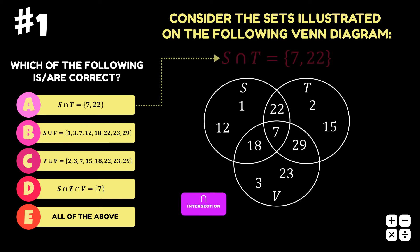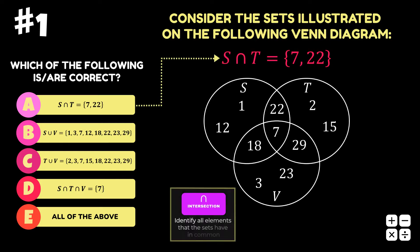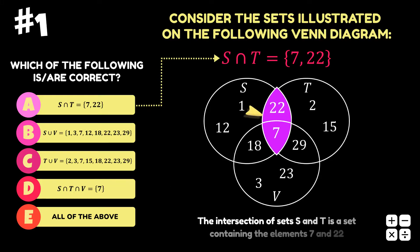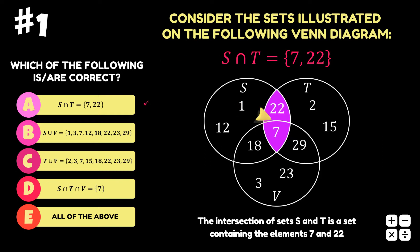Option A is the intersection of sets S and T. Looking at the Venn diagram, the intersection of sets S and T is the area shared by both of these sets, and the elements in the shared area are 7 and 22. Therefore, option A is correct.